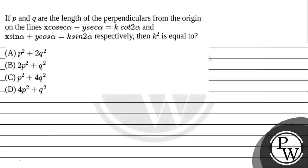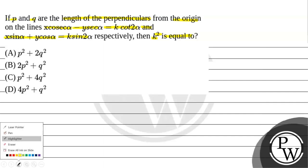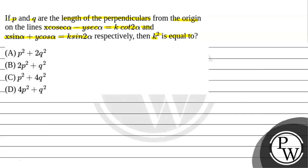Hello Bacho. In this question it is given that if P and Q are the lengths of the perpendiculars from the origin on the lines X cosecant alpha minus Y secant alpha equals K cos 2 alpha, and X sin alpha plus Y cos alpha equals K sin 2 alpha, then K square is equals to. For finding the answer, let us write the key concept.